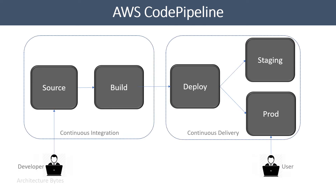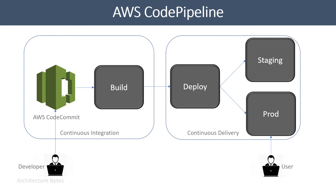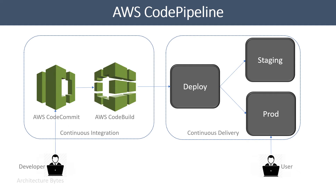Let us see how stages and action providers make up a pipeline. The first stage of AWS Code Pipeline is always Source. The action provider here could be an Amazon Git repository — that is AWS CodeCommit — or an external repository on GitHub. We will go with AWS CodeCommit here. For the Build stage action, we will choose AWS CodeBuild as the action provider. Note that you can even skip this stage and go straight to the deployment stage.